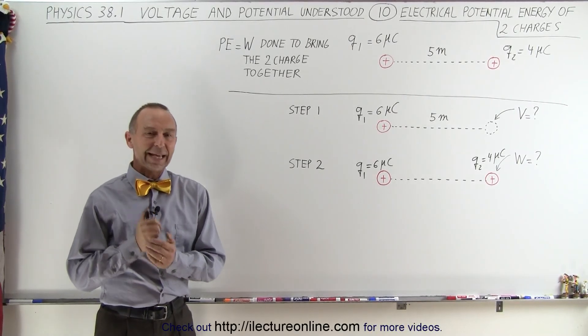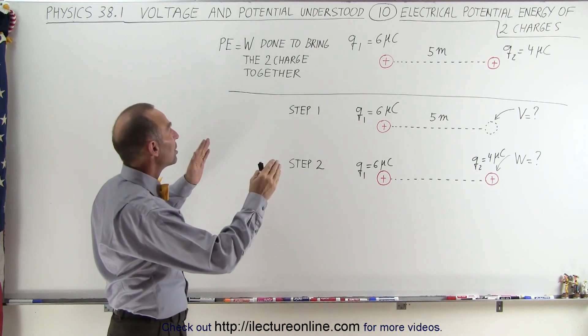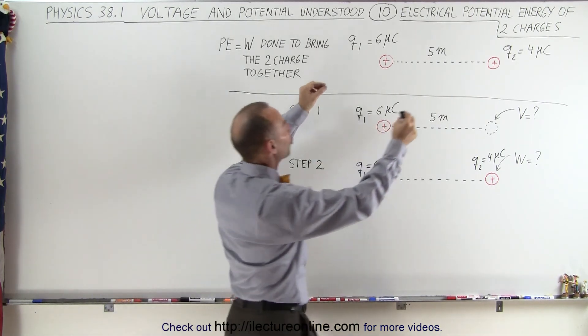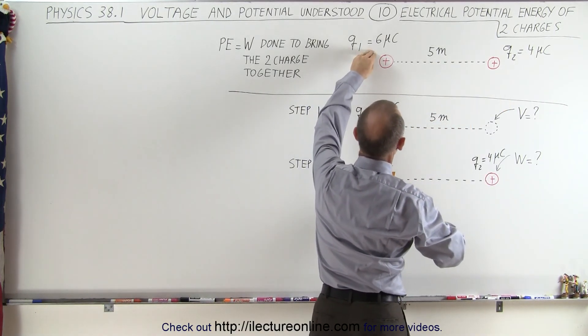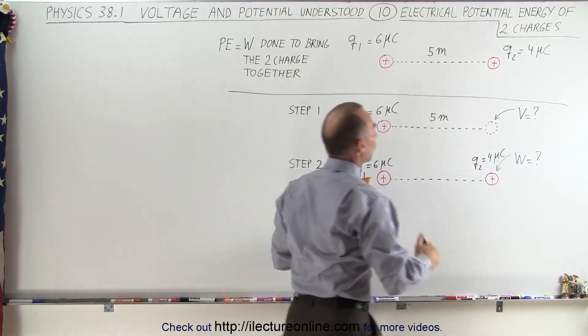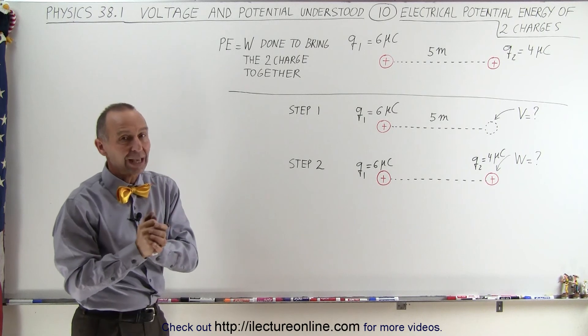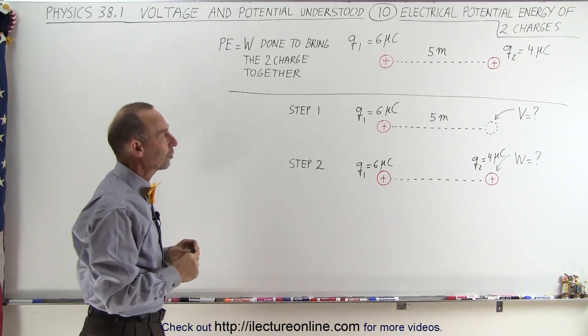Welcome to White Lecture Online. In this video, we're going to try to find the potential energy required, or the work required, to put two charges five meters apart: one charge being six microcoulombs, the other charge being four microcoulombs. So what is the potential energy of that system? The same as what is the work that it takes to put those two charges close together.